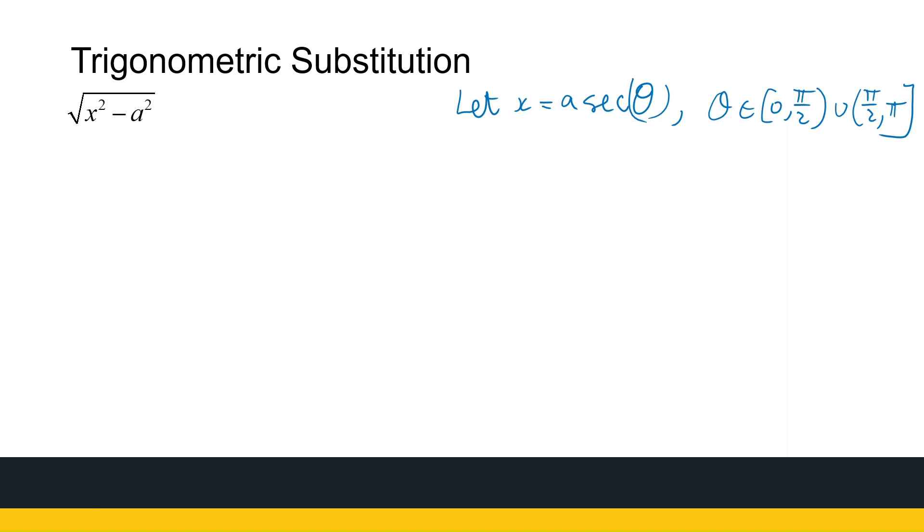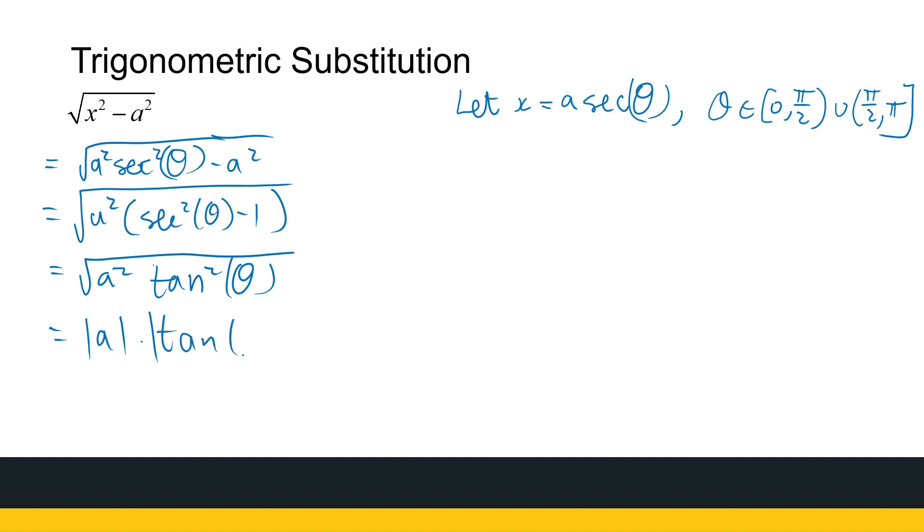All right, now this is going to help sec inverse exist, but it's not going to help me with the next part you'll see shortly. So that is a squared sec squared theta minus a squared. We can again take a squared out as a common factor, and I've got sec squared theta minus 1. So that gives me a squared times tan squared theta, which is the absolute value of a times the absolute value of tan of theta.